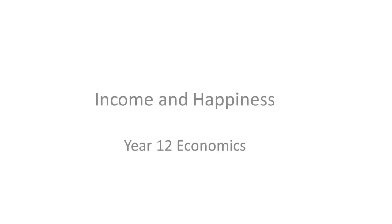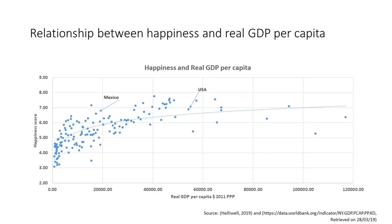Other countries are also measuring happiness in the same sort of way, and so economists have started to compare happiness and real GDP statistics across different countries. This first graph shows a cross-country comparison between the level of happiness on the y-axis, which is between 0 and 10, and the level of real GDP per capita on the x-axis.